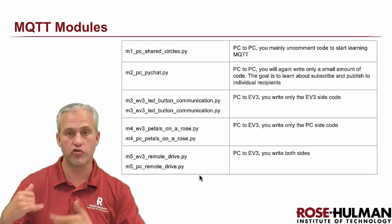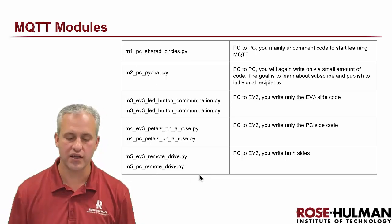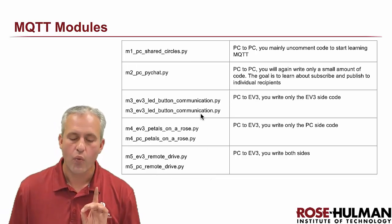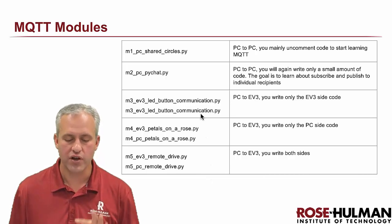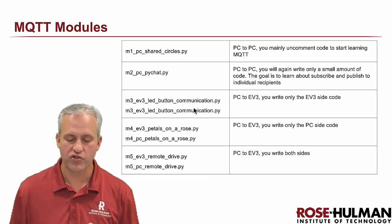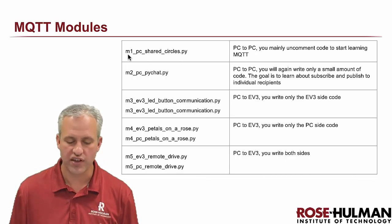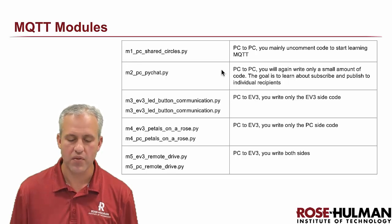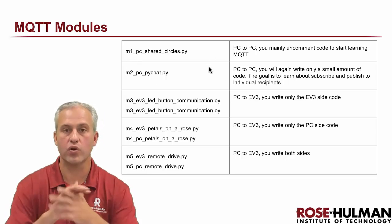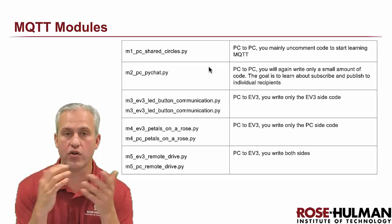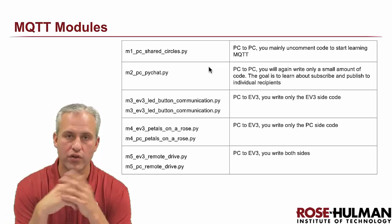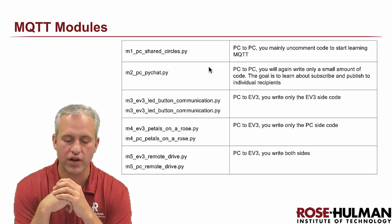M5 is the remote control that you're going to make at the end. One thing I want to mention about these M's is you'll notice that the first two — M1 PC and M2 PC — are just going to be running on your computer, the personal computer.